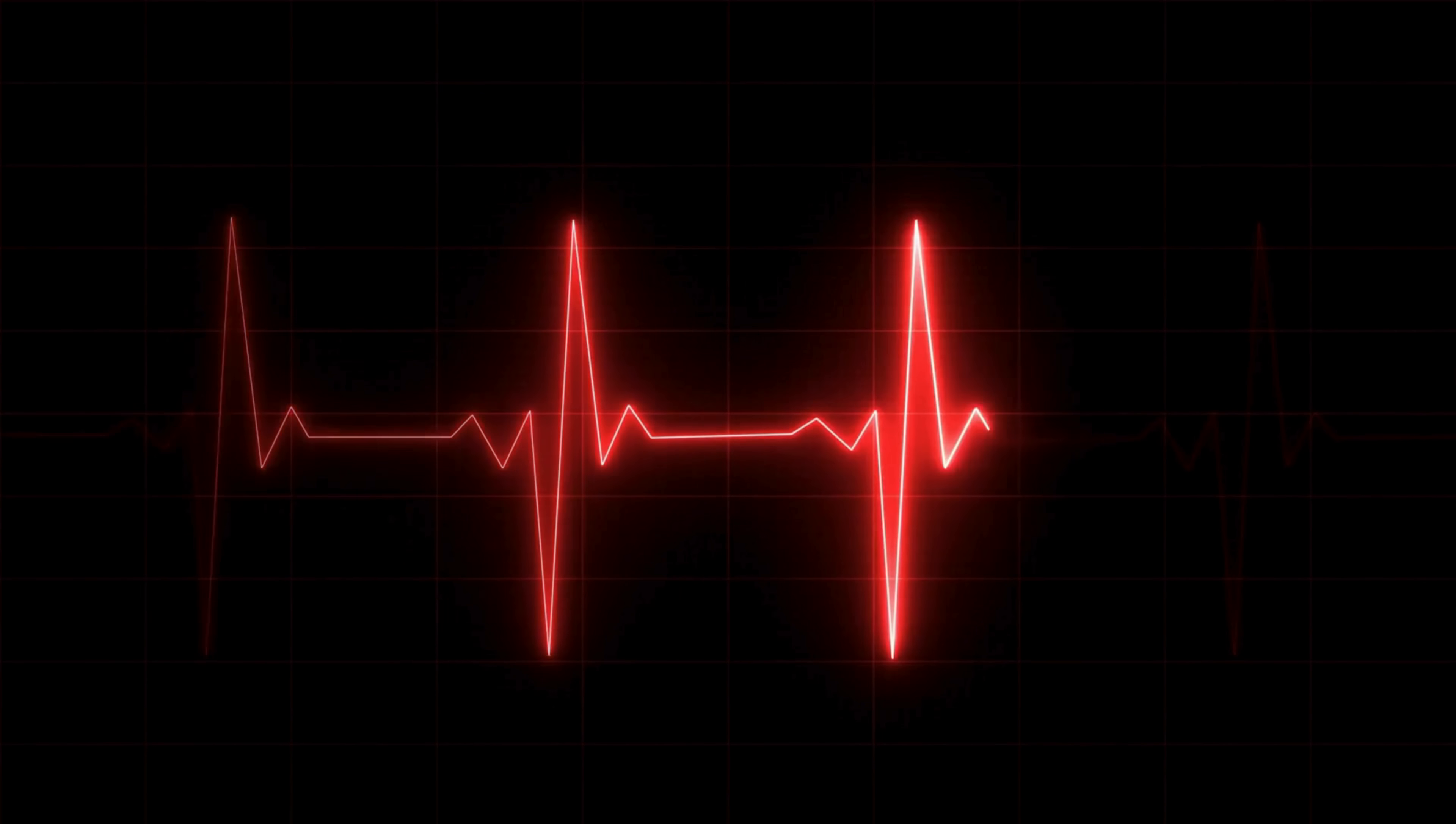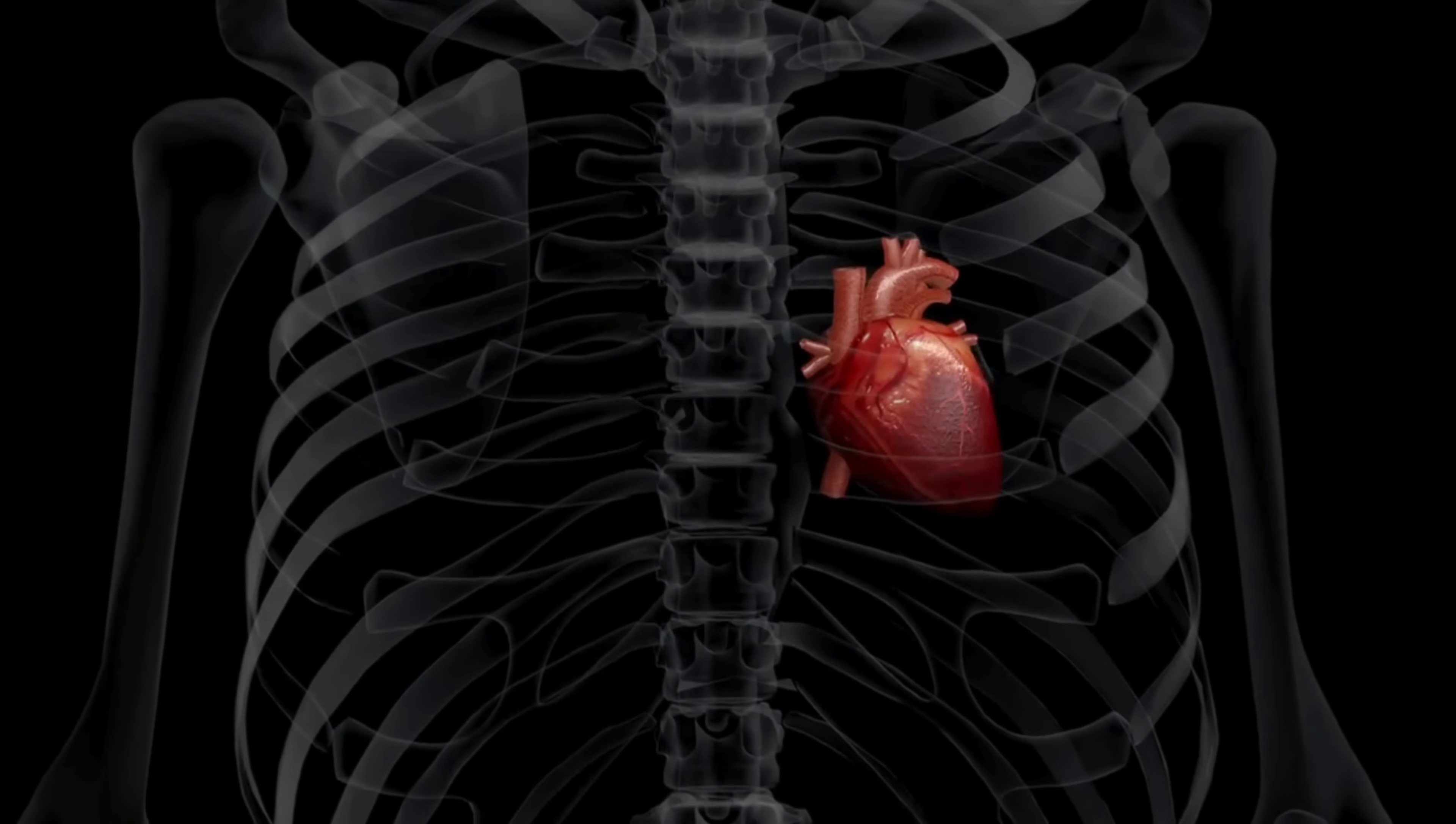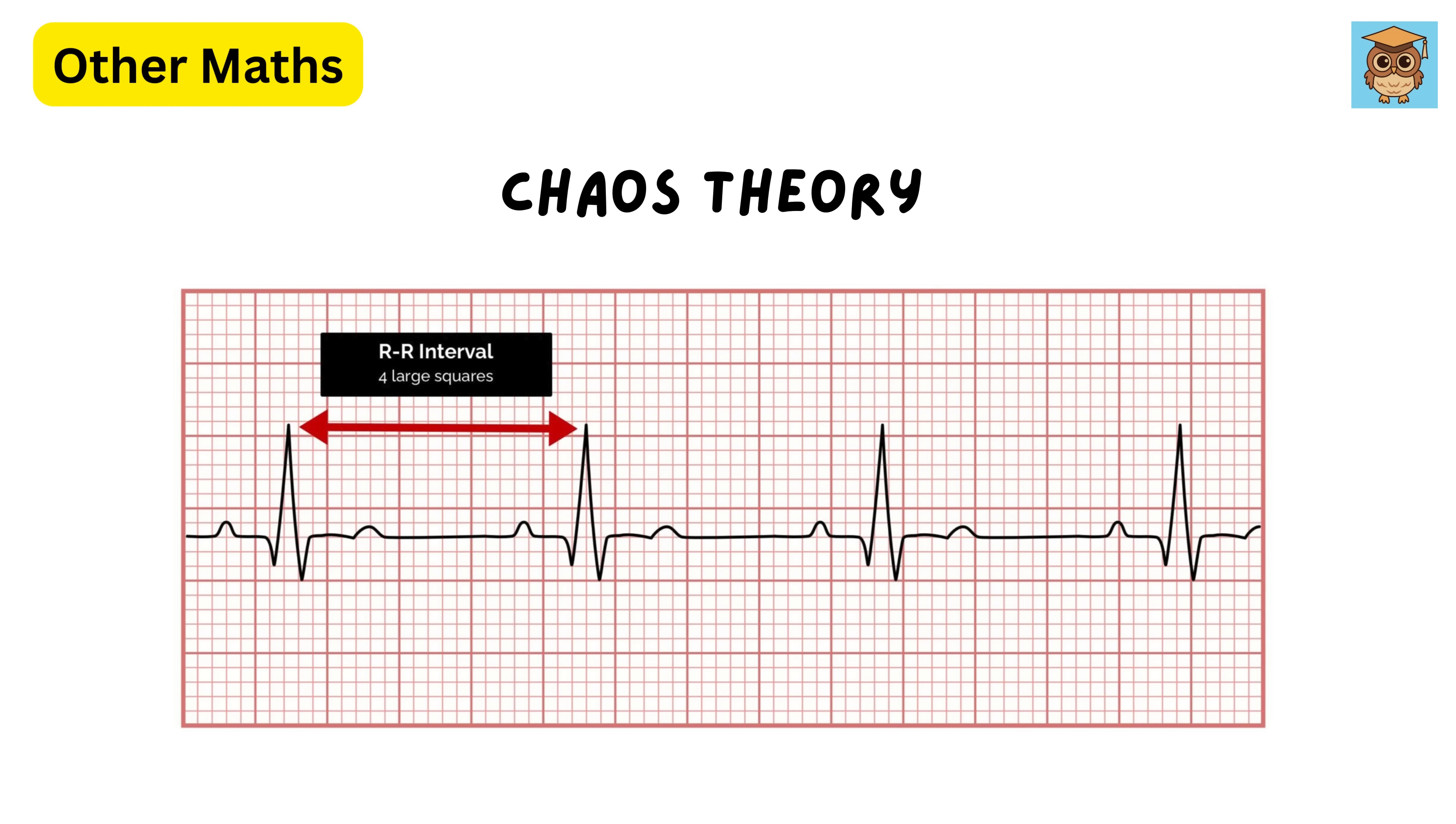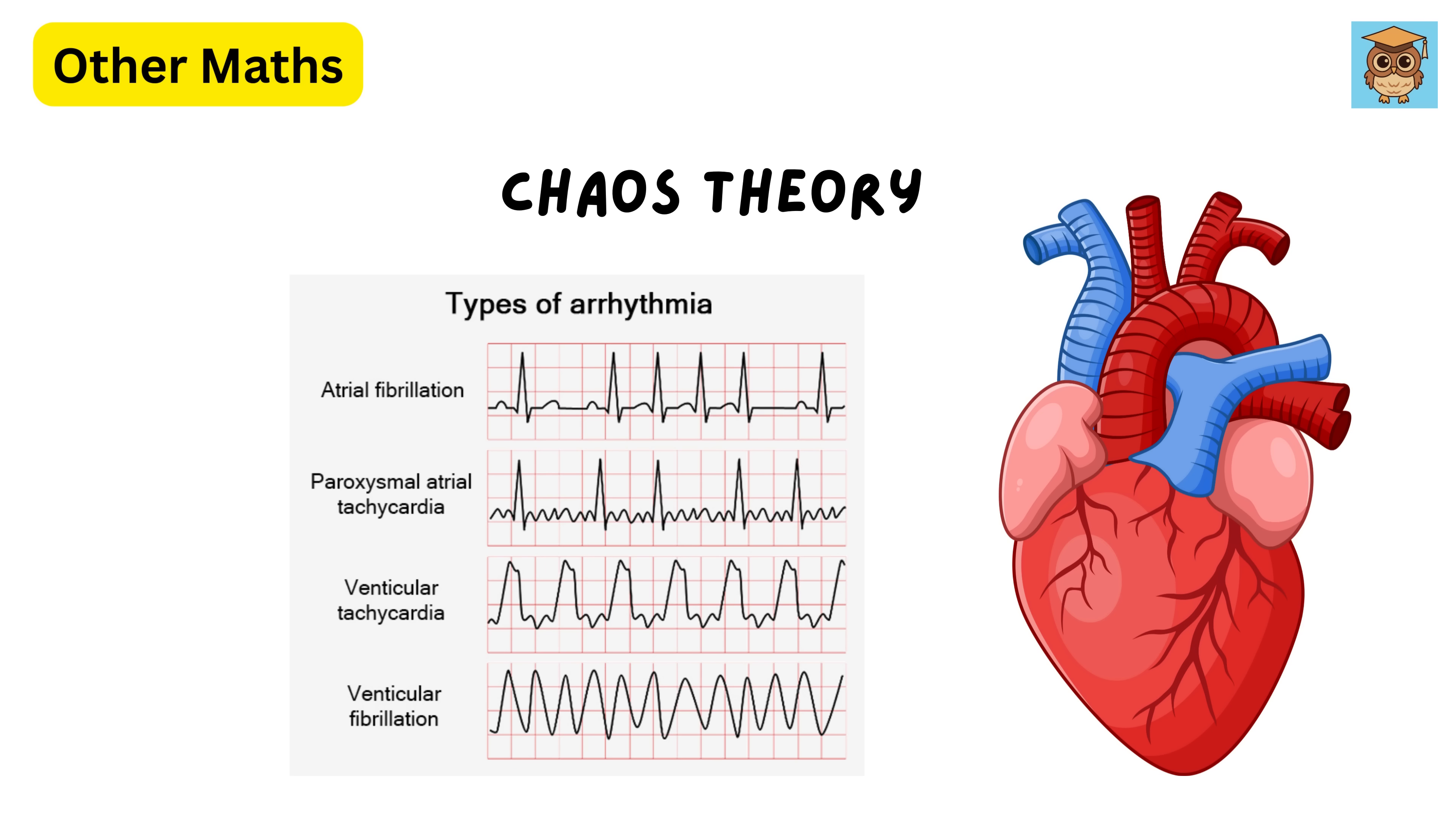The human heart doesn't beat with perfect regularity. Slight variations in rhythm are natural and even healthy. However, excessive order or rigidity in heartbeats can indicate potential cardiac issues. Chaos theory helps analyze electrocardiograms to detect irregular patterns, such as arrhythmias.